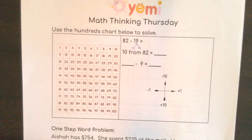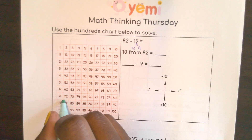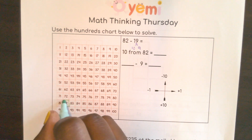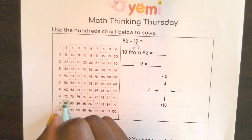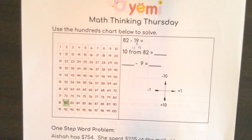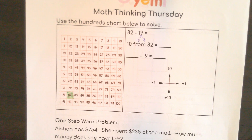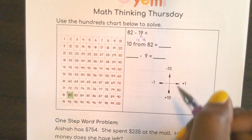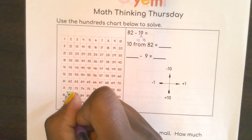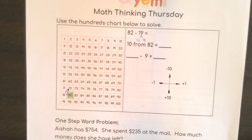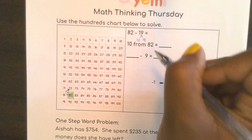So here, I'm going to have a highlighter. If I start with 82 right here and I'm going to subtract 10 — what direction would I go in to subtract 10? We know from our compass, we would go up. So 82 minus 10 is 72.